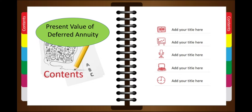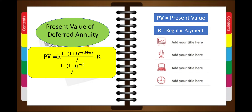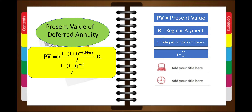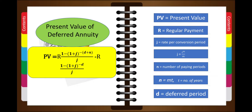To find the present value of a deferred annuity, we use this formula. PV means present value, R means regular payment, and J is the rate per conversion period. To find J, that is i divided by M, which is the conversion period. N is the number of paying periods; to find N, multiply M (the conversion period) times T (the number of years). To find D, the deferred period, we subtract 1.